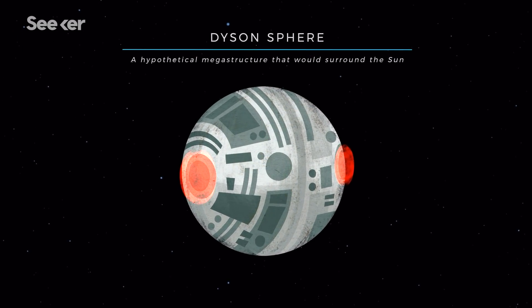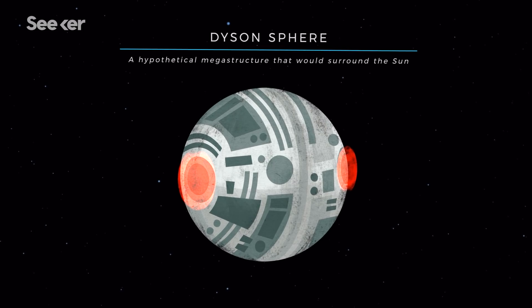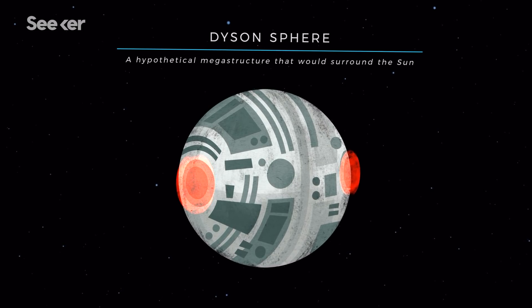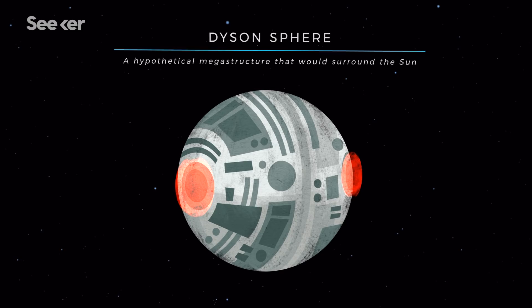This concept inspired what later became known as a Dyson Sphere, a hypothetical megastructure that would surround the Sun, soaking up its light and converting it into useful energy.